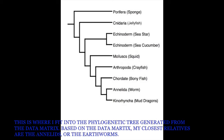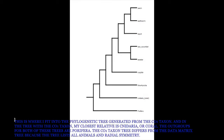This is where I fit into the phylogenetic tree generated from the data matrix. Based on the data matrix, my closest relatives are the annelids, or the earthworms. And this is where I fit into the phylogenetic tree generated from the CO1 taxon. In the tree with the CO1 taxon, my closest relative is Cnidaria, or the corals.